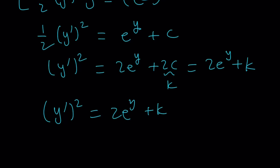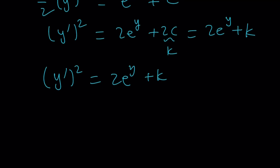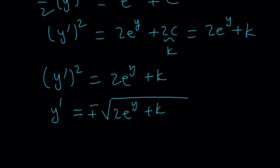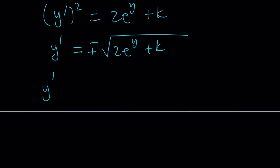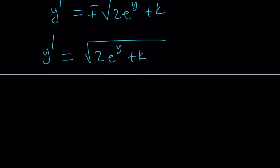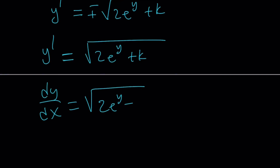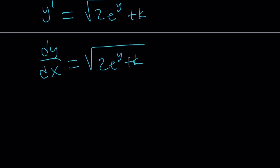Let's go ahead and take care of this. We're going to take the square root of both sides, and we get plus or minus the square root of 2e to the y plus k. For simplicity's sake, I can just go ahead and pick the positive solution — the negative will be very similar. So this is y prime; let's write it as dy over dx equals the square root of 2e to the y plus k. And now what I need to do is write this as a separable differential equation.